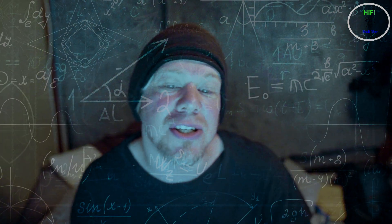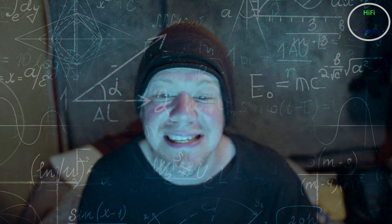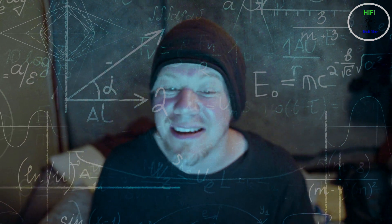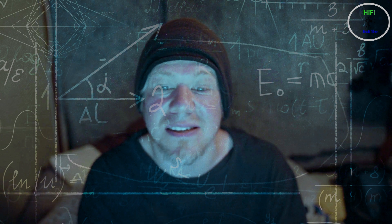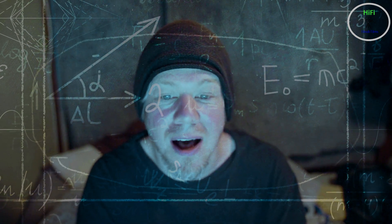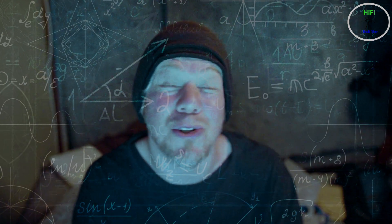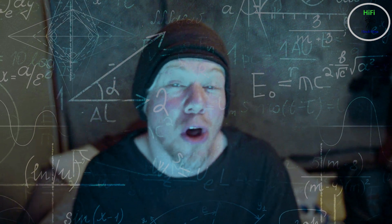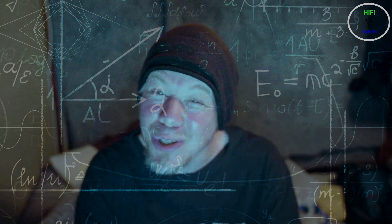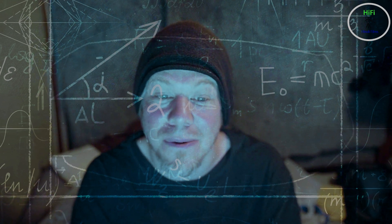During a program at the Southern Methodist University in 1977, Devi correctly answered in 50 seconds a question about the 23rd root of a given number with 201 digits. A special computer with large computation abilities actually took longer to calculate that answer than she did.